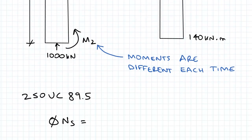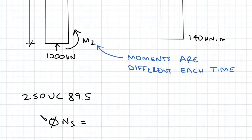Now the column I'm calling is a 250UC89.5, so the Phi NS value equals 2872.8 kilonewtons.